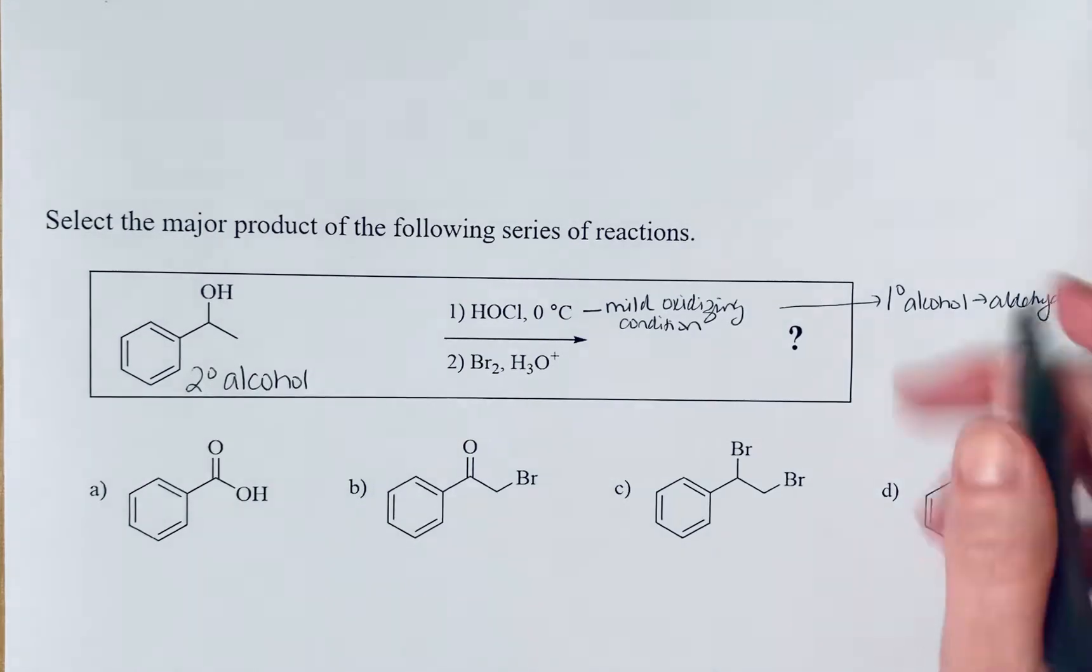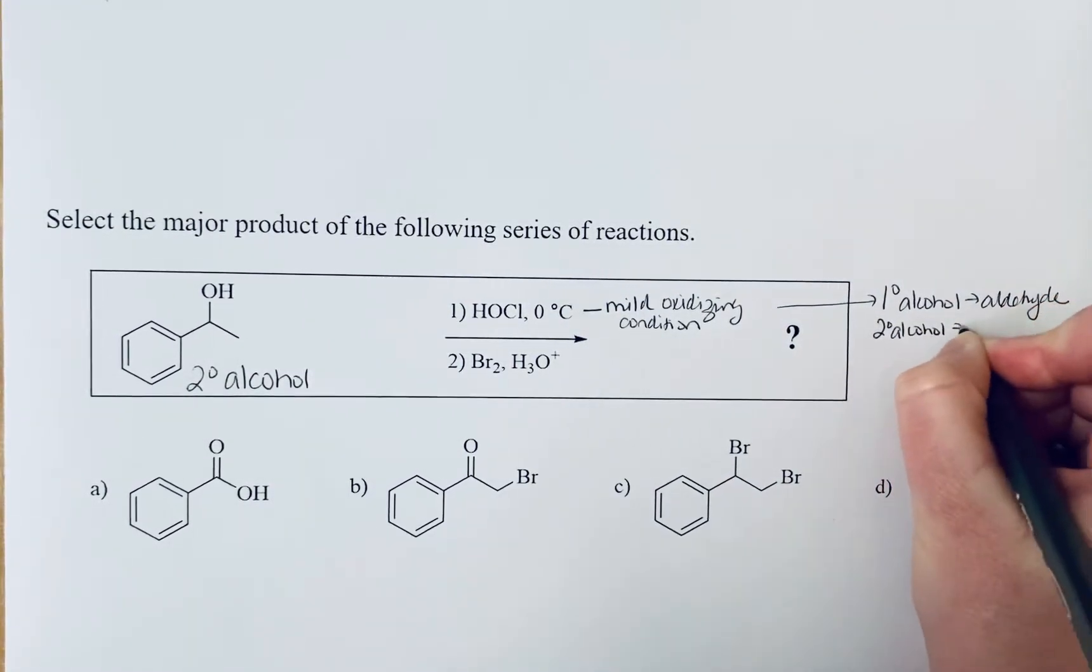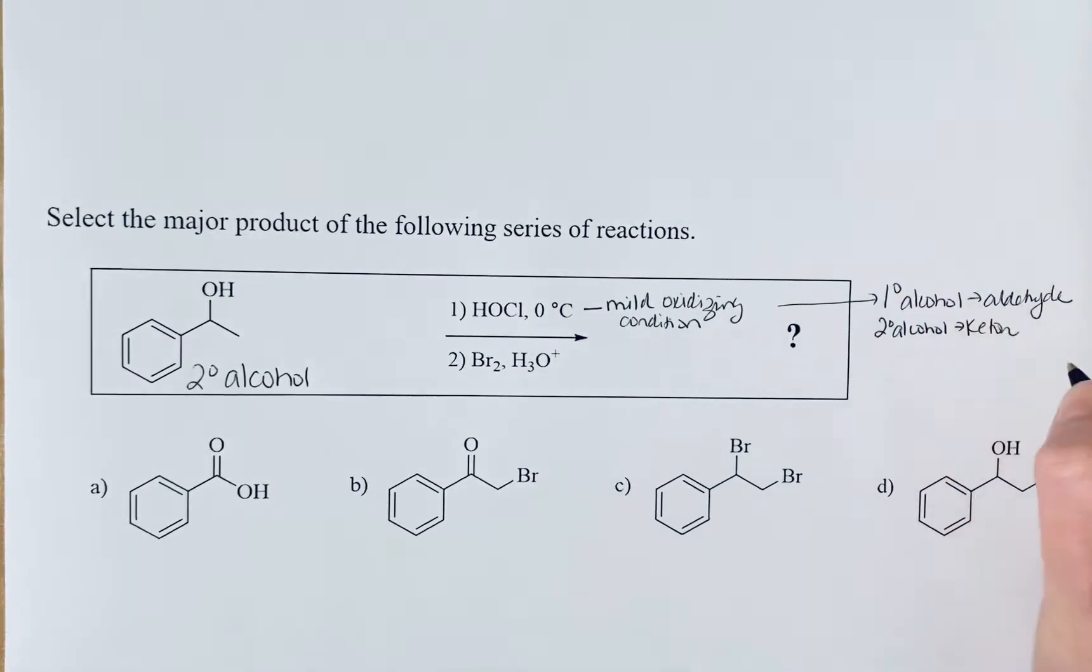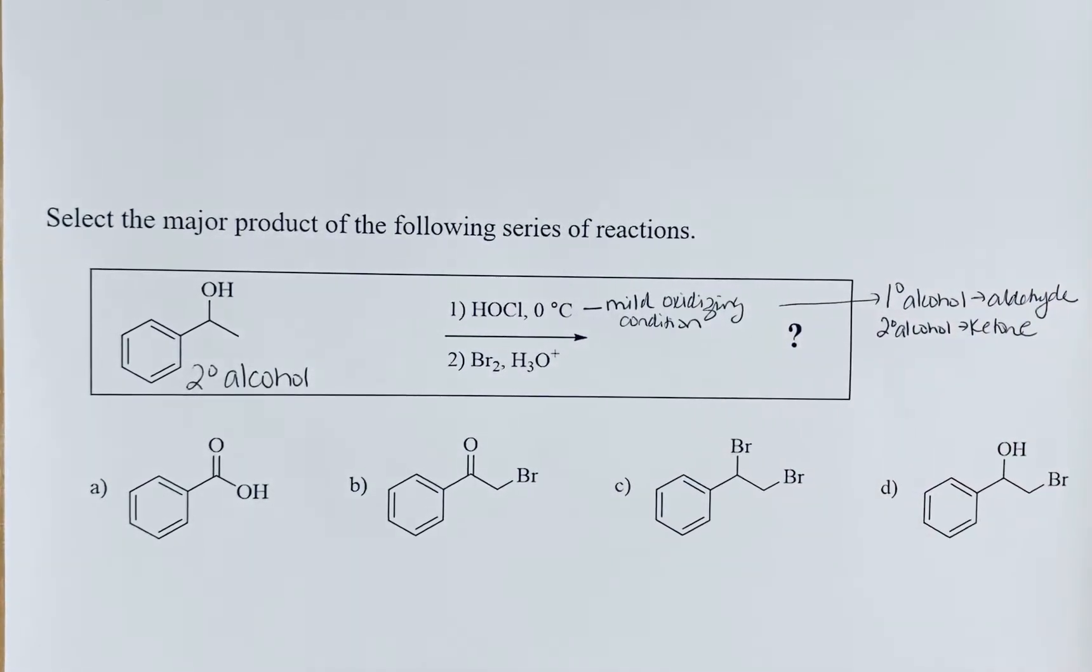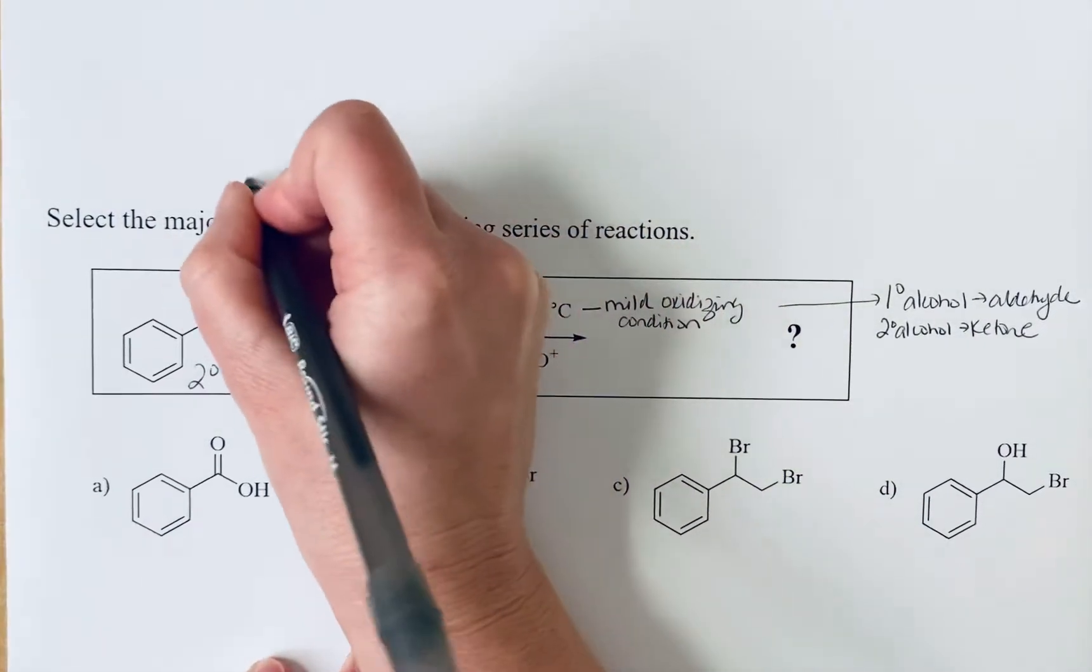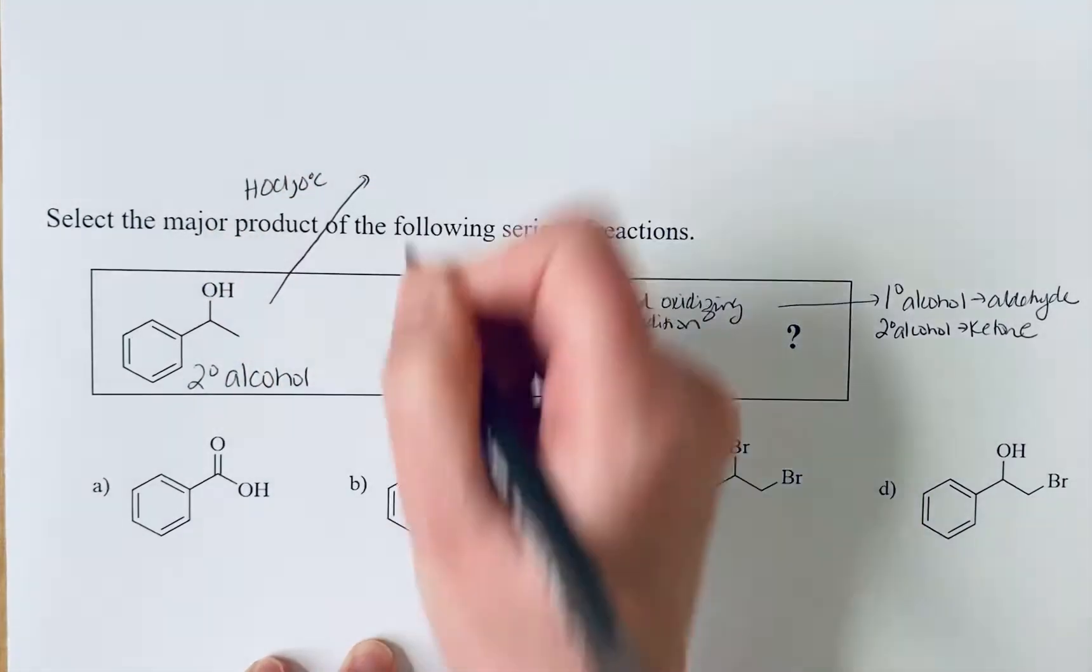We have a secondary alcohol and we don't really see selectivity here because when you oxidize a secondary alcohol regardless of the conditions you use you're going to make the ketone. So that's what's going to happen in this first step. The product of this first step with your hypochlorous acid at low temperature is you're going to make the ketone.